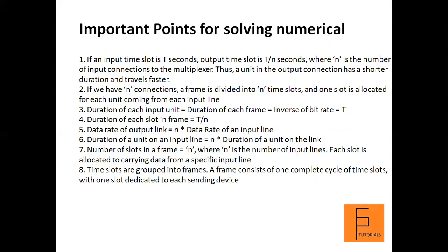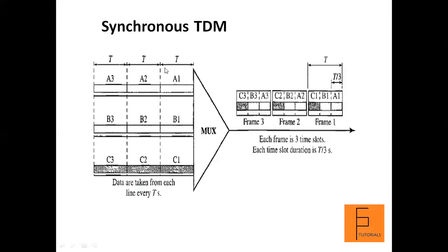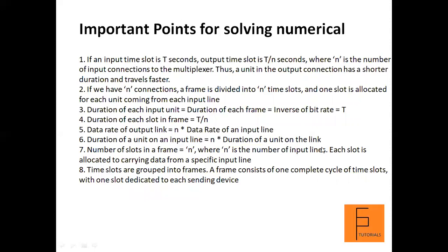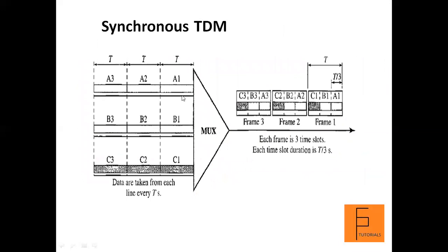To explain this further: the duration of an input unit on an input line is T — this is the time occupied by A1, B2, C1, etc. The duration of a unit on the link refers to the slot duration in a frame, which is T/3. The time duration of an input line is therefore three times the duration of a unit on the link. With N = 3 input lines, multiplying T/3 by 3 gives T — which is the same as the input slot duration.